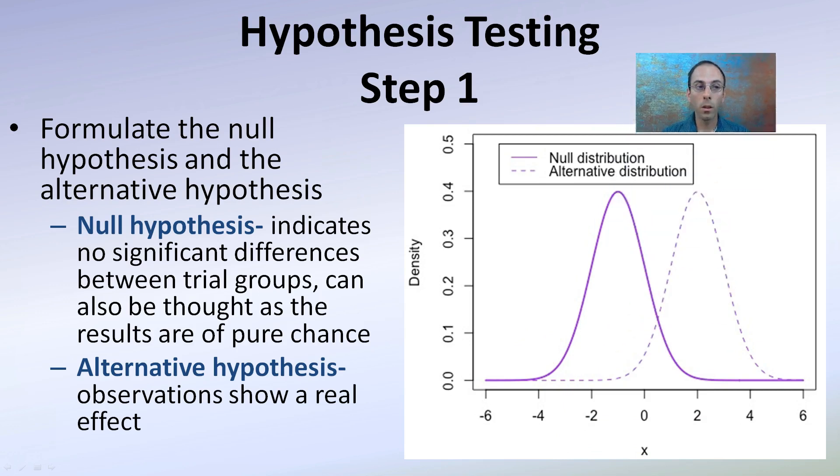So step one: formulate the null hypothesis and alternate hypothesis. Null indicates that there's no significant differences between trial groups, and it can also be thought of as occurring by pure chance. If I'm determining a fertilizer will make a plant grow better, the null hypothesis would say the fertilizer will not make the plant grow better. In contrast, the alternate hypothesis says observations will show real effects, meaning the fertilizer will make the plants grow better.